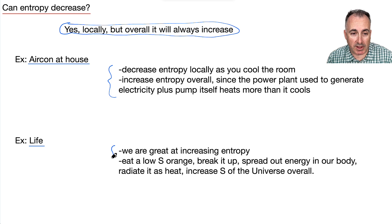Another example could be life. We're great at increasing entropy. And why is that? We eat a low entropy orange. Imagine I have an orange in my hand or something, and it's very ordered. And of course, what do I do? I eat it. So I break it up in different pieces. I spread out that energy into our bodies. I radiate that back out into the atmosphere as heat. I basically, I've increased the entropy of the universe overall. So see, life, we are great at actually increasing entropy.